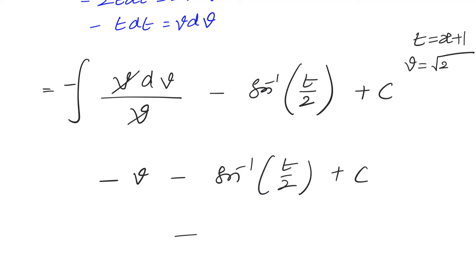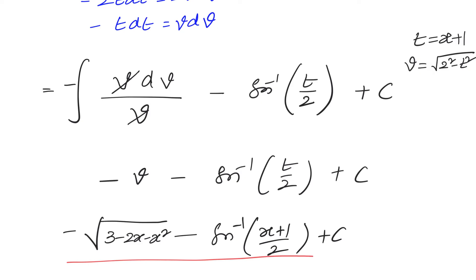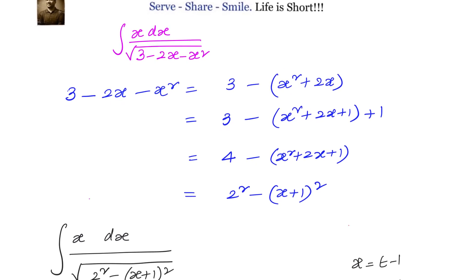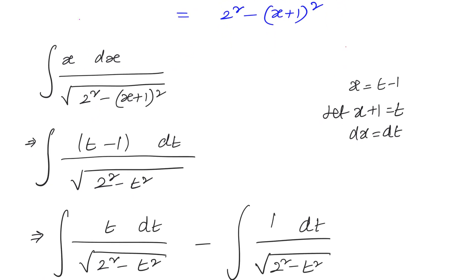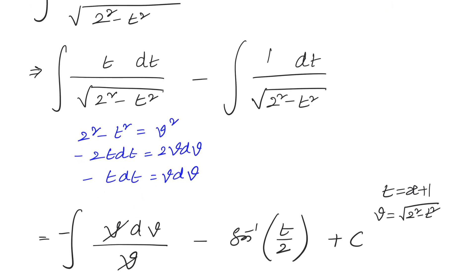Now substituting back: v is square root of 2 squared minus t squared, and t equals x plus 1. That is nothing but the original denominator, which is square root of 3 minus 2x minus x squared. So the final answer for the integral of x over square root of 3 minus 2x minus x squared is minus square root of 3 minus 2x minus x squared, minus sin inverse of (x plus 1)/2, plus C.